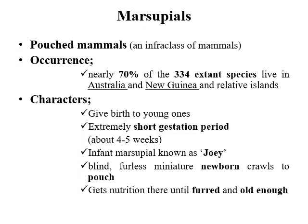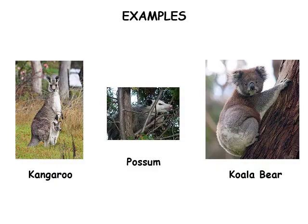Out of 334 marsupial species, about 70% inhabit Australia, New Guinea, and the related islands. Marsupials are mammals that give birth to their young after an extremely short gestation period. The infant marsupials, known as joeys, are blind, furless, and miniature newborns which crawl to the pouch, or marsupium, where they receive nutrition until furred and old enough. Kangaroo, possum, and koala bear are the most prominent marsupials of the Australian region.